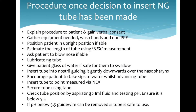The procedure for inserting an NG tube begins by explaining the procedure to the patient and gaining verbal consent. Gather the equipment needed, wash hands, and don PPE. Position the patient in an upright position if able. Estimate the length of tube using the NEX measurement. Ask the patient to blow their nose if able. Lubricate the NG tube and give the patient a glass of water if safe for them to swallow. Insert the tube into the nostril, guiding it gently downwards over the nasopharynx. Encourage the patient to take sips of water while advancing the tube.